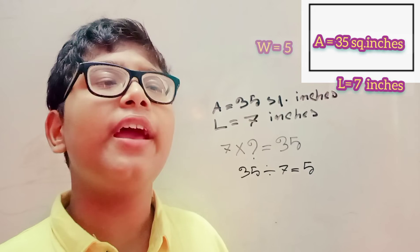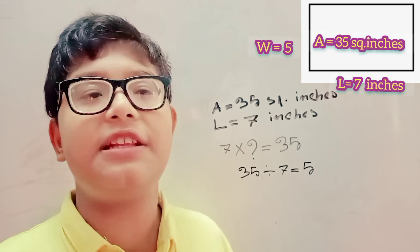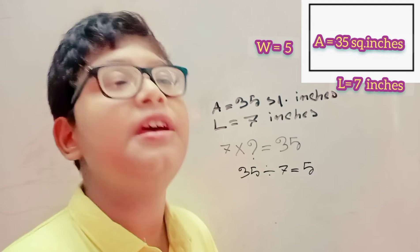We can now apply the perimeter formula because we know that the length is 7 inches and the width is 5 inches.